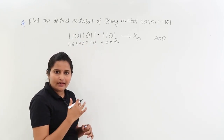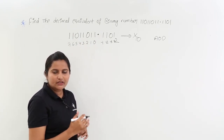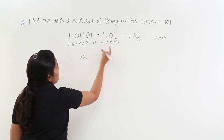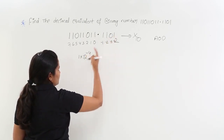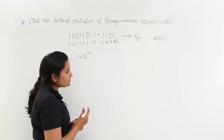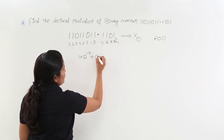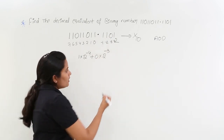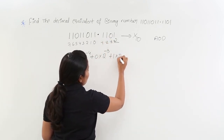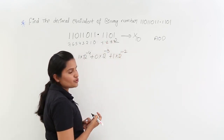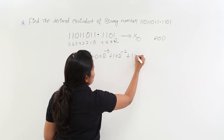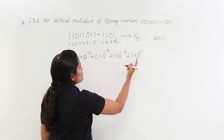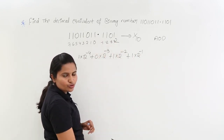After assigning place values, our aim is to multiply each digit by 2 raised to its place value. Taking the first fractional digit: 1 × 2^(−4). The second digit: 0 × 2^(−3). Then 1 × 2^(−2), and 1 × 2^(−1). Every time we consider base 2, because we are converting from base 2 to base 10.